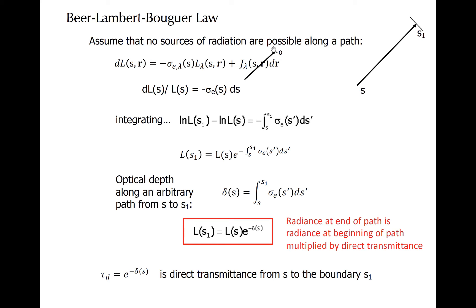We can do some simple algebra to show that radiance at the end of the path, at s1 in this example, is equal to radiance at the beginning of the path, at s, reduced by the direct transmittance. This looks like the first term in the equation from the previous slide. This relationship is known as the Beer-Lambert-Bouguer law, also known as Beer's law. And here it is right here. Radiance at s1 is equal to radiance at s times the direct transmittance.